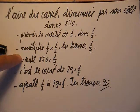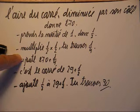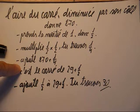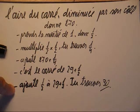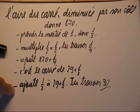Tu multiplies 1 demi par 1 demi, tu trouves 1 quart. Tu ajoutes 870 plus 1 quart. Et ce dernier nombre c'est le carré de 29 plus 1 demi. Tu ajoutes 1 demi à 29 plus 1 demi et tu trouves 30.